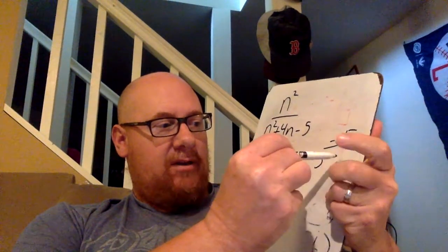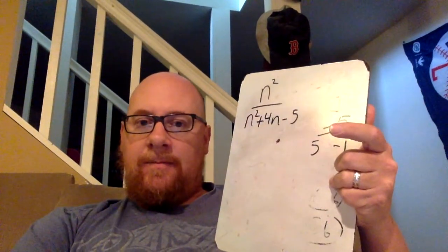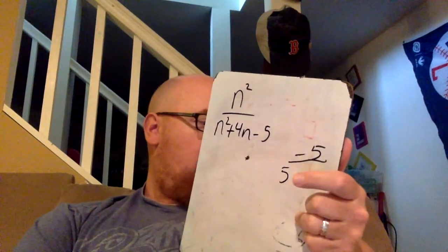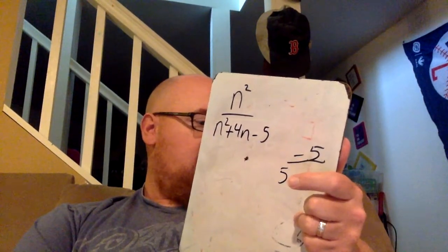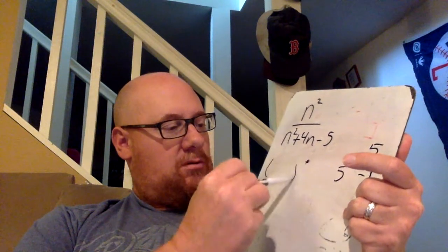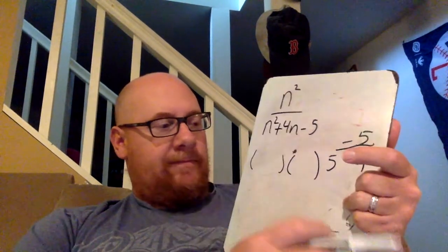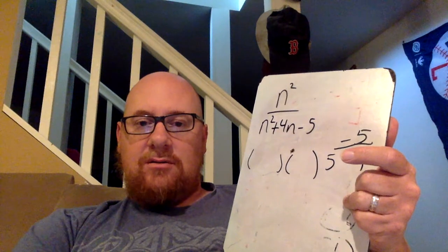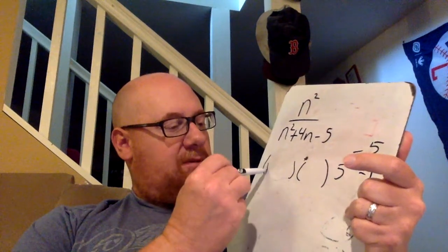That's really easy. It's going to be five and negative one. Okay, so now we have to then simply split this up into two different factors. We know that n is going to be in both of them.